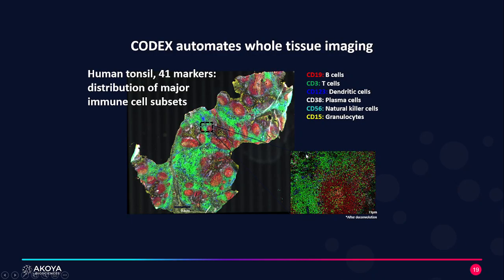Here's an example of a Codex experiment in which 41 markers were imaged on Codex tissue. Again, we're compatible with fresh frozen and FFPE tissue sections.